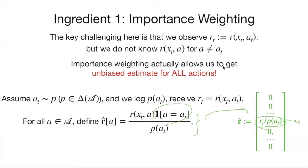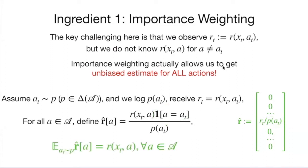The claim is that this reward vector R-hat is an unbiased estimate of the ground truth reward vector. The expected value of R-hat at any action A equals the reward at context X_t measured at action A — even for actions you haven't tried. You try one action, log its probability, write this vector with zero everywhere except the entry for A_t, and put R(A_t) divided by its probability. That's it — this is an unbiased estimate of the entire reward vector.